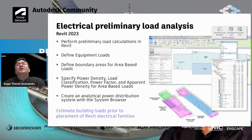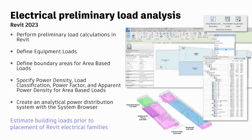There is a new addition in Revit 2023 that enables you to do preliminary load calculations. You can define equipment loads, define boundary areas or area-based loads, and specify power density, load classification, power factor, and apparent power density for area-based loads. You can create an analytical power distribution system with the system browser. These analysis tools will enable you to define boundary areas for area-based loads and equipment loads.